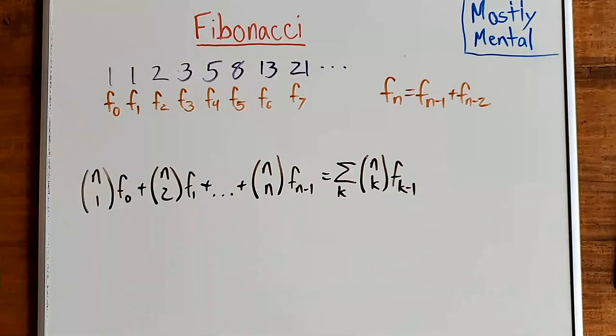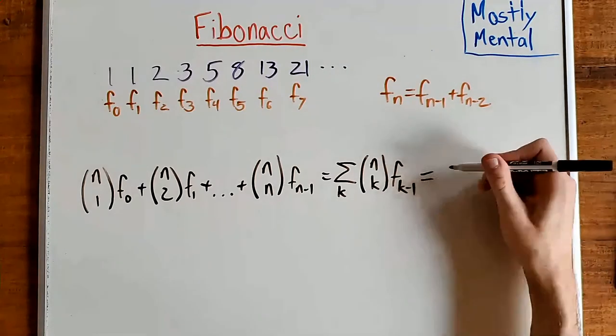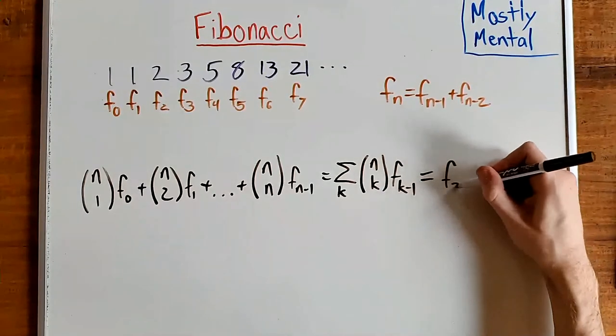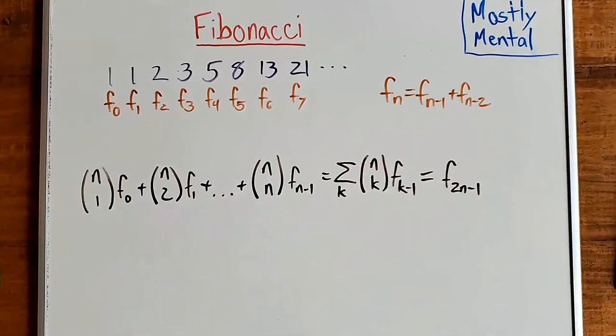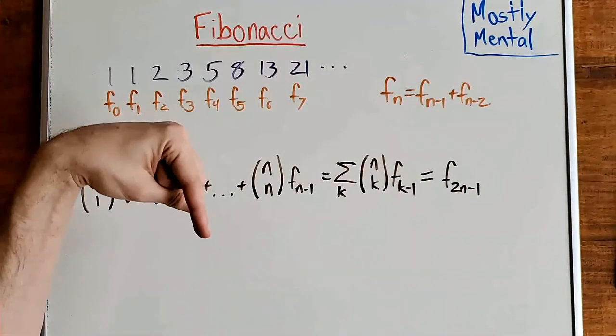Prove that that sum comes out to F sub 2n minus 1. I'd love to see your proofs in the comments below.